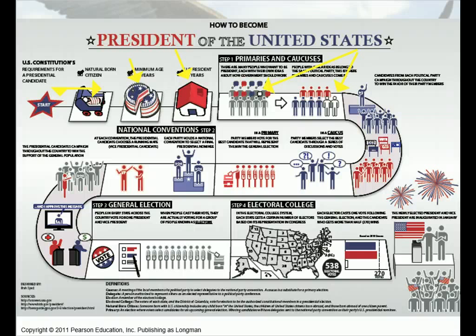The other is the caucus, which is basically a meeting. Usually this is in smaller states, and what happens is you go into a church or a school or a town hall, and you basically raise your hand or stand up for the candidate of your choice. In Texas, on the Democratic Party side, we actually have what they call the Texas two-step, which means we have both a primary and a caucus. That's a little different, but it works within the Democratic Party in Texas — not for the Republicans, but we do for the Democrats.